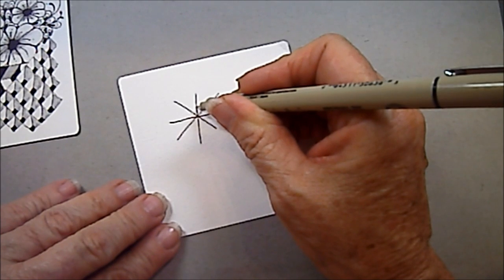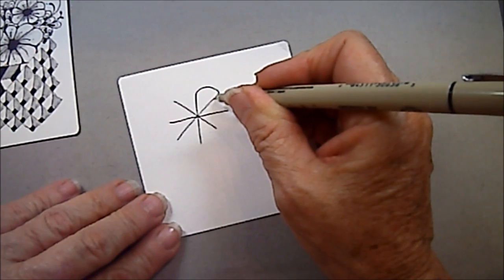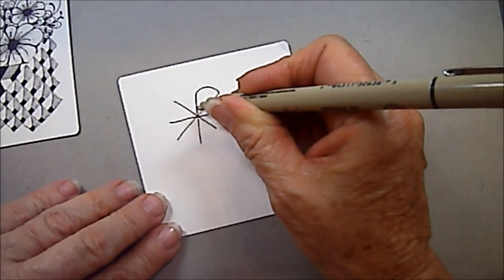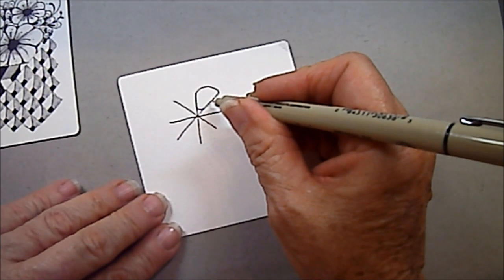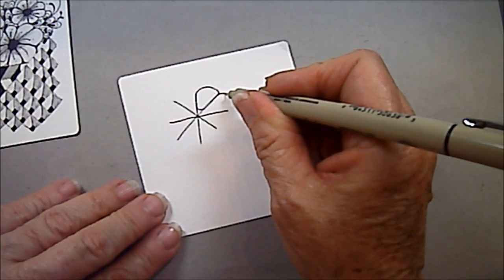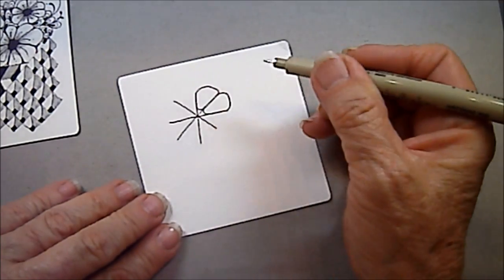We're just going to start on the line. I'm going to come up. I'm going to do a rounded top, come back down the line, and round in. So there's just a petal shape. We just come up, round the top, come back down, and round in.